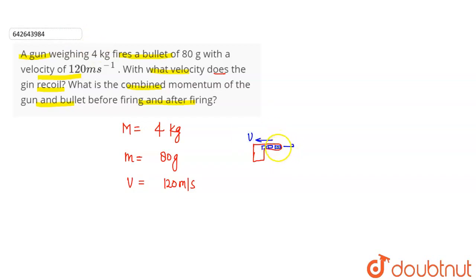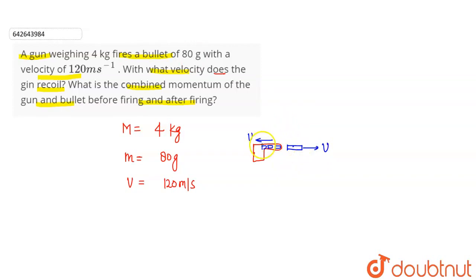When the bullet comes out, its velocity is high — the bullet exits at 120 meters per second. The bullet goes out in one direction, and the gun moves back in the opposite direction. The momentum will be conserved, and that backward velocity of the gun is called the recoil speed.